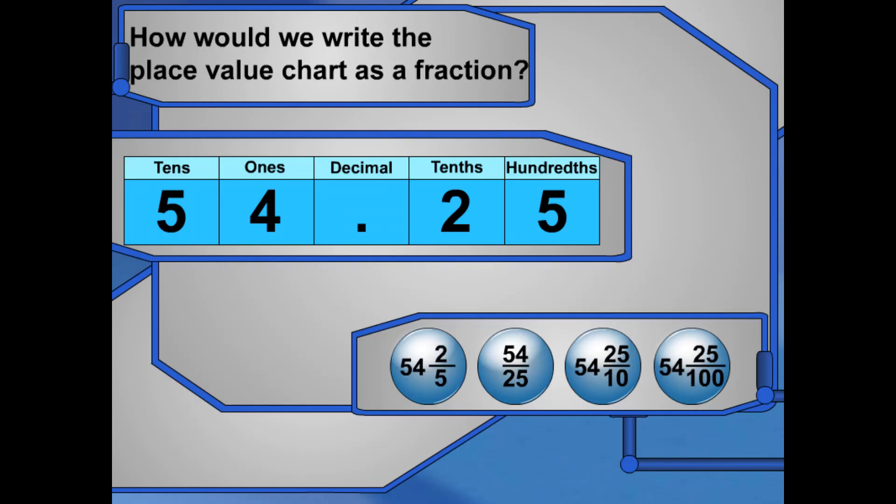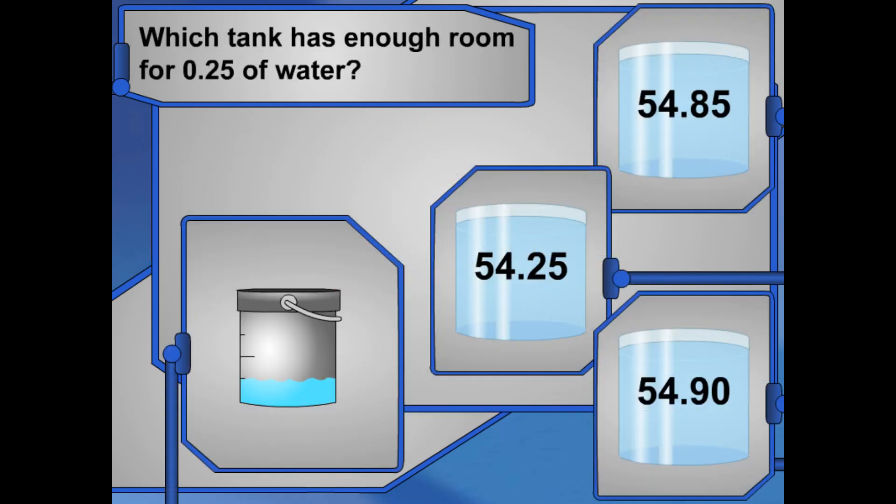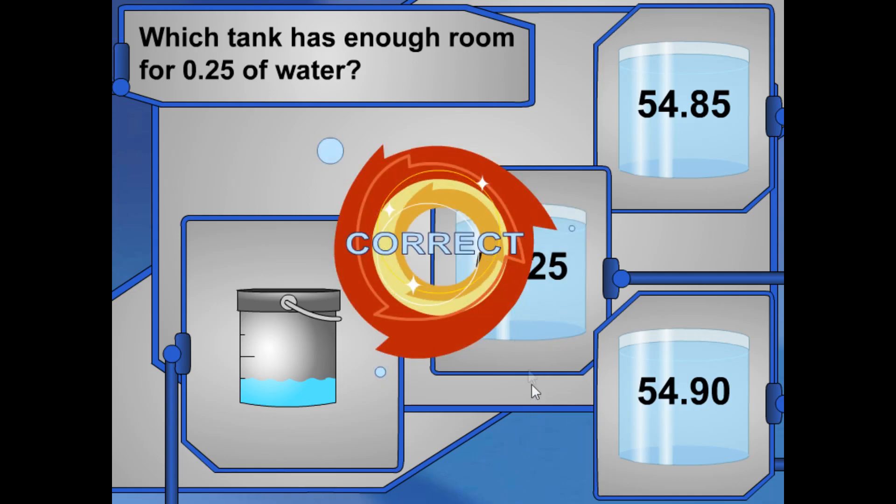Look at this chart for the water level on tank 2. How would we write it as a fraction? Awesome! Okay, I have 0.25 liters left in my bucket. These three tanks hold 55 liters each. Which of the tanks can I add it to so that the tank doesn't overflow? Great!